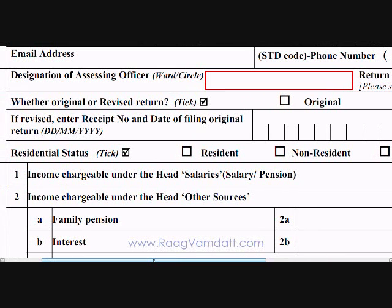Then mention if you are filing an original return or a revised return. In case you are filing a revised return, you would also need to indicate the receipt number and the date of filing of the original return. You can get these from the acknowledgement you received from the original form. In the residential status field, select the correct residential status. For most people, it would be Resident.